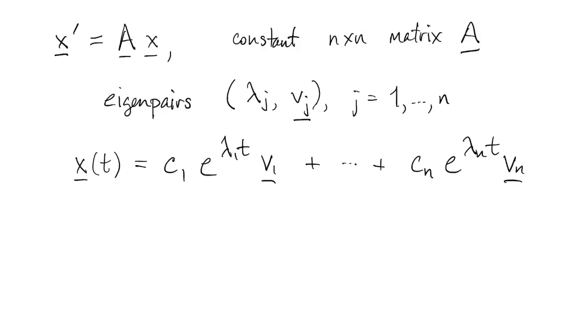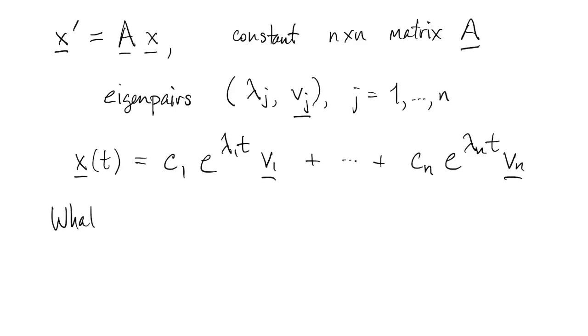Now we know that to solve a linear system with constant coefficients, we need to find the eigenvalues and eigenvectors of that matrix A, and then we can write out the solution in terms of exponentials.